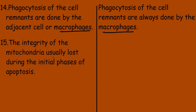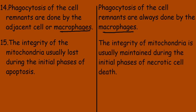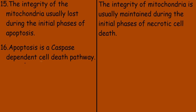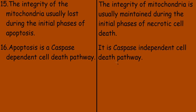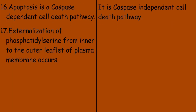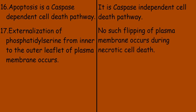The integrity of the mitochondria is usually lost during the initial phases of apoptosis, while mitochondrial integrity is usually maintained during the initial phases of necrotic cell death. Apoptosis is a caspase-dependent cell death pathway, while necrosis is a caspase-independent cell death pathway. Externalization of phosphatidylserine from the inner to the outer leaflet of the plasma membrane occurs during apoptosis, while no such flipping of the plasma membrane occurs during necrosis.